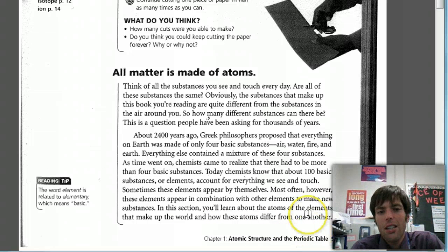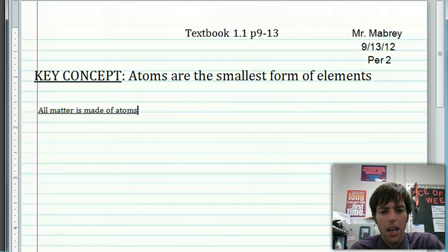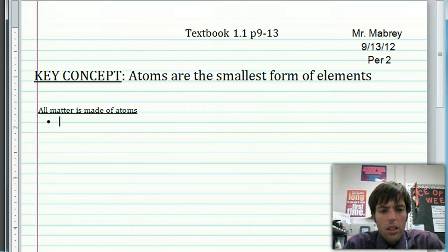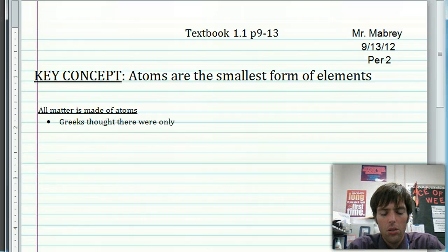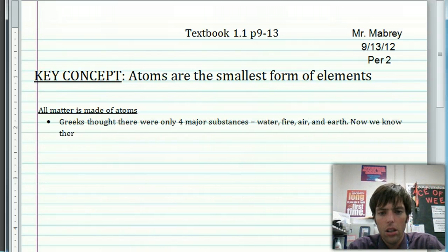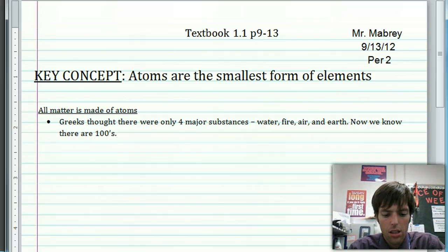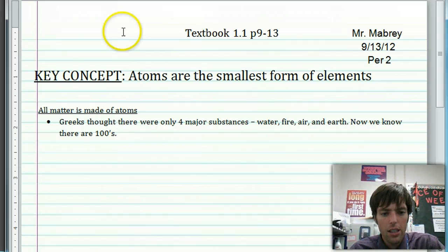Now you're thinking and I'm thinking, this sounds like introductory, there's nothing really here. But there's at least one idea. And the idea that I'm seeing that I'm going to write down is: Greeks thought there were only four major substances - water, fire, air, and earth. Now we know there are hundreds. Cool. And that is it. Let's move on to the next page. It's that easy.